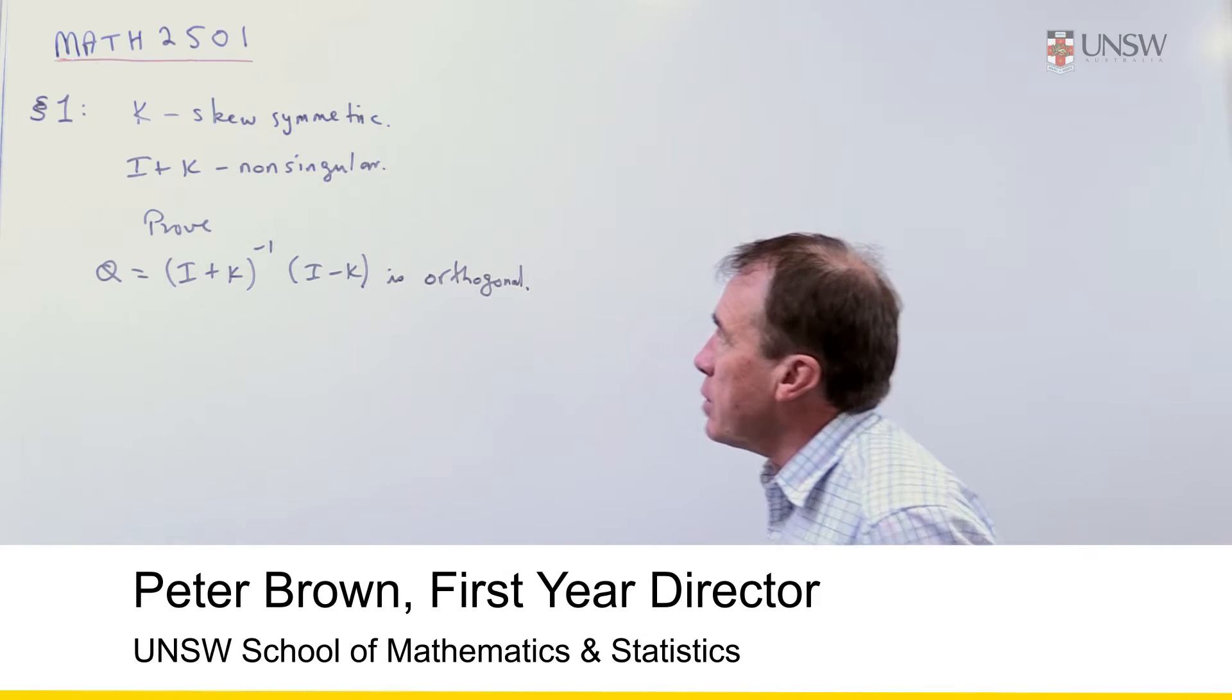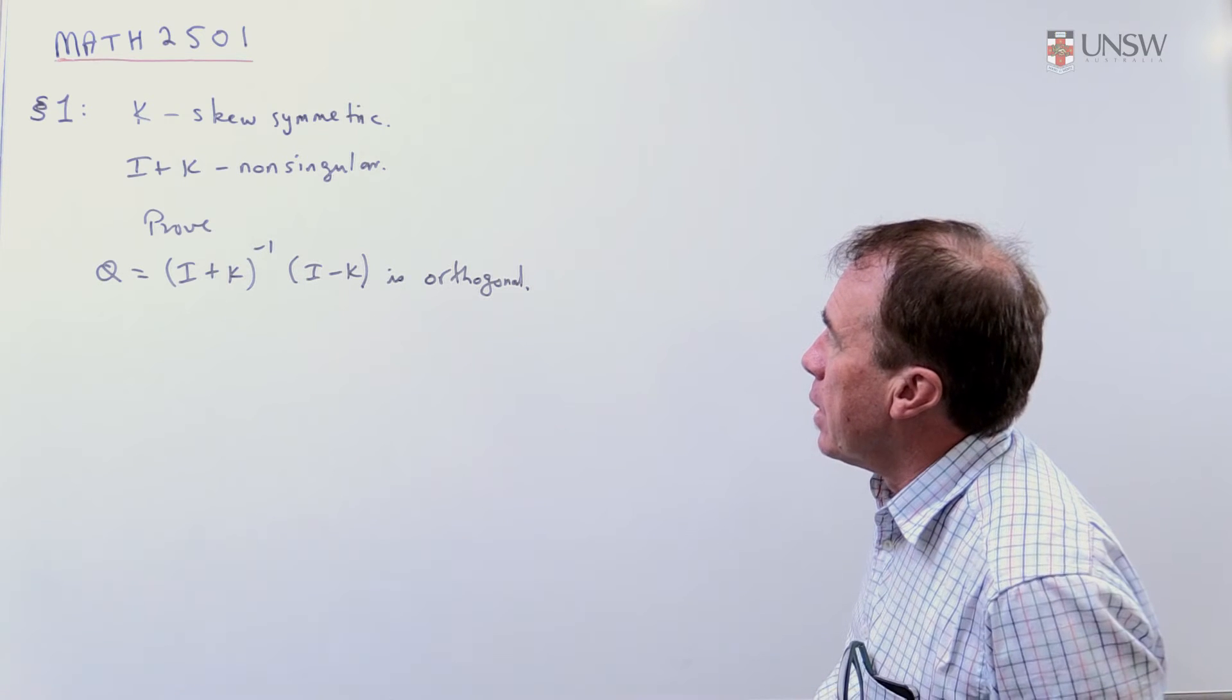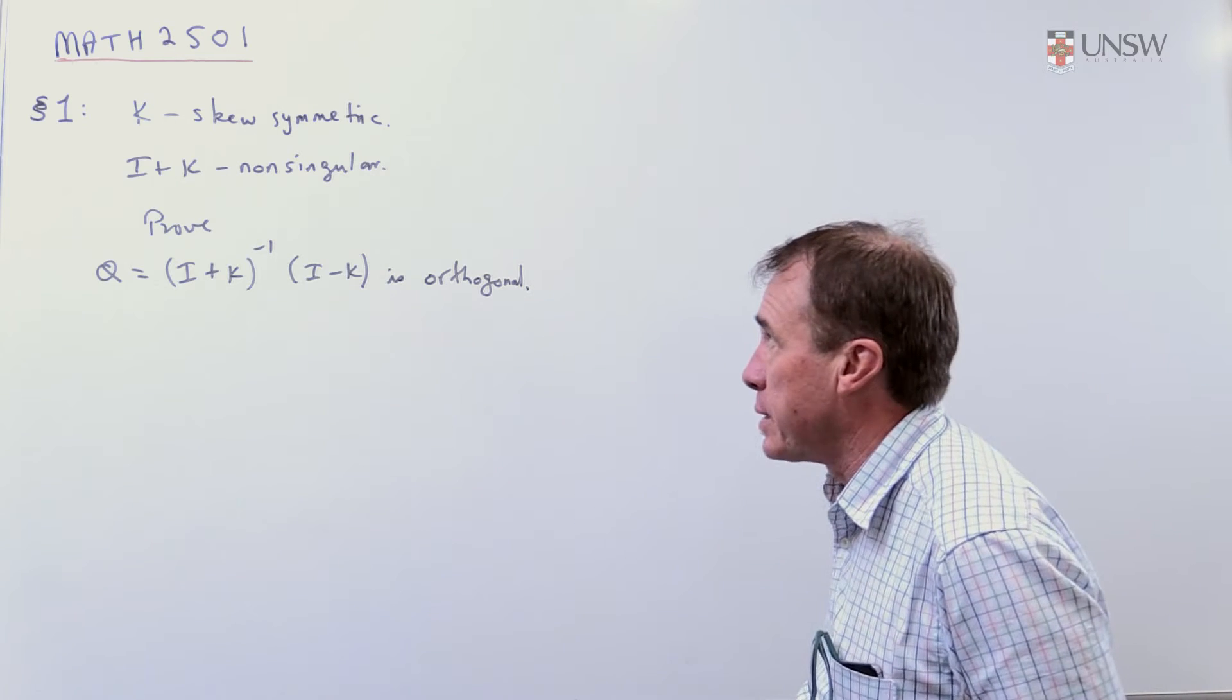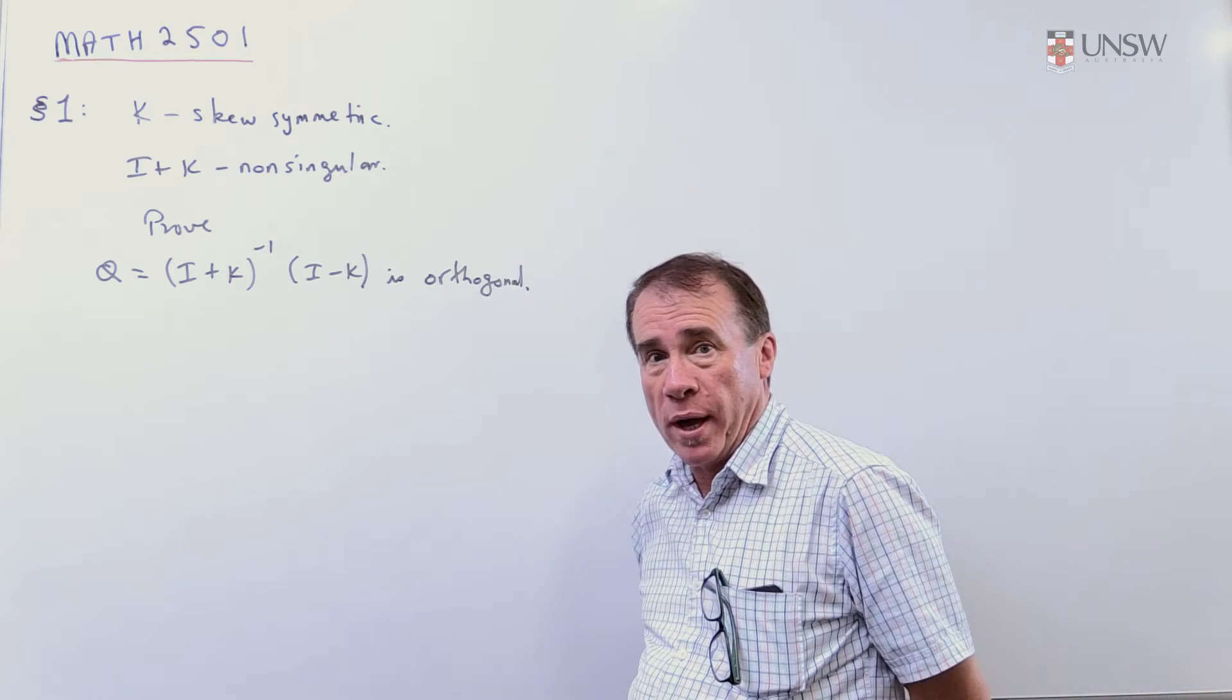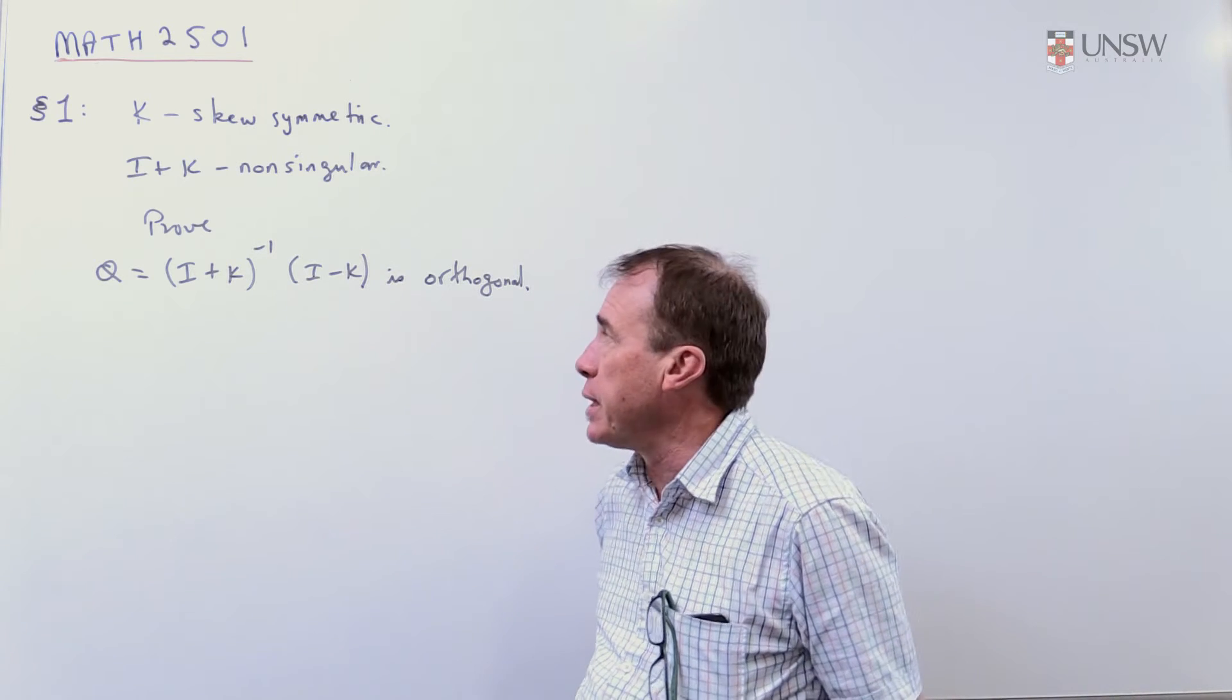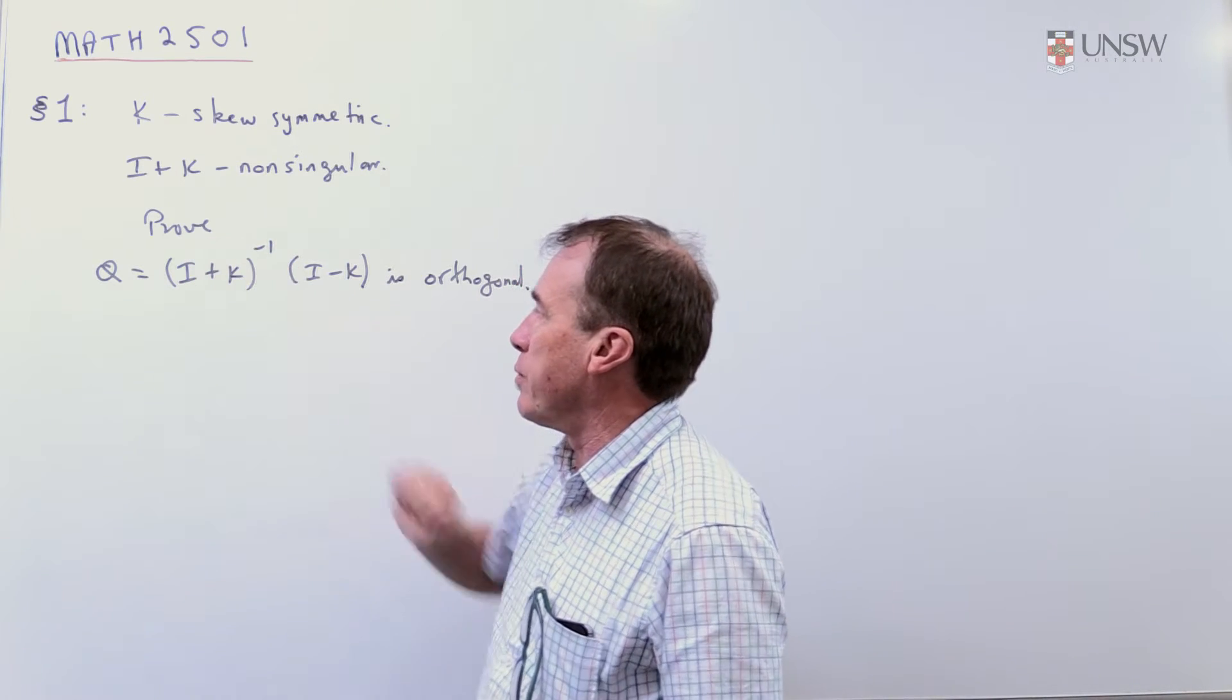The second question from section 1 is we're going to have a look at this matrix K. We're given K as a skew-symmetric matrix, and we're going to worry about what skew-symmetric means. And I plus K is non-singular. That simply means that it has an inverse, which means this expression here is well defined.